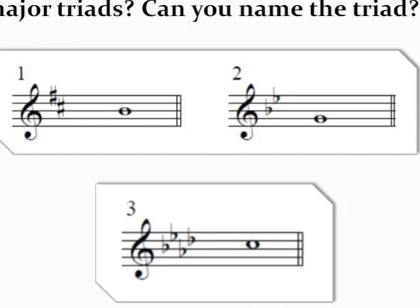In number three, we have the note C, which is the third of the triad. In order to find the root, we need to go down a major third to A-flat. A-flat is the root, C is the third, and E-flat is the fifth. So this is an A-flat major triad. When writing the A-flat major triad in first inversion, we would write E-flat above the C, and A-flat above the E-flat. Remember, the triad is always named by the root of the chord, and the inversion is determined by the bass note.